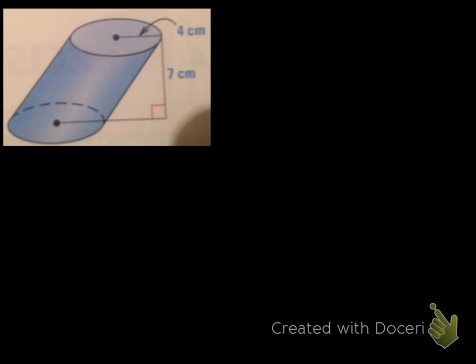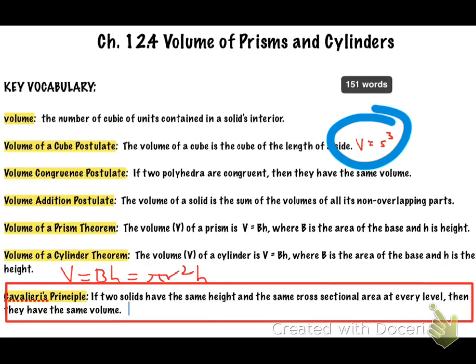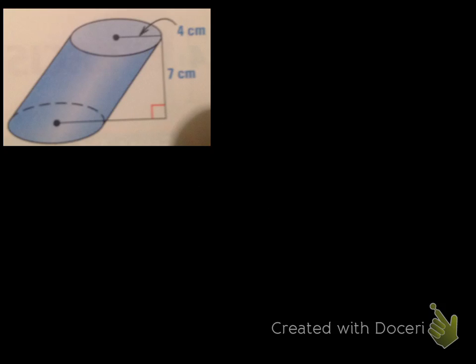The last example deals with Cavalieri's principle. Let's review it one more time: Cavalieri's principle states that if two solids have the same height and the same cross-sectional area at every level, then they have the same volume. If you want more information, see page 821 in your textbook. In this last example, we have an oblique cylinder.